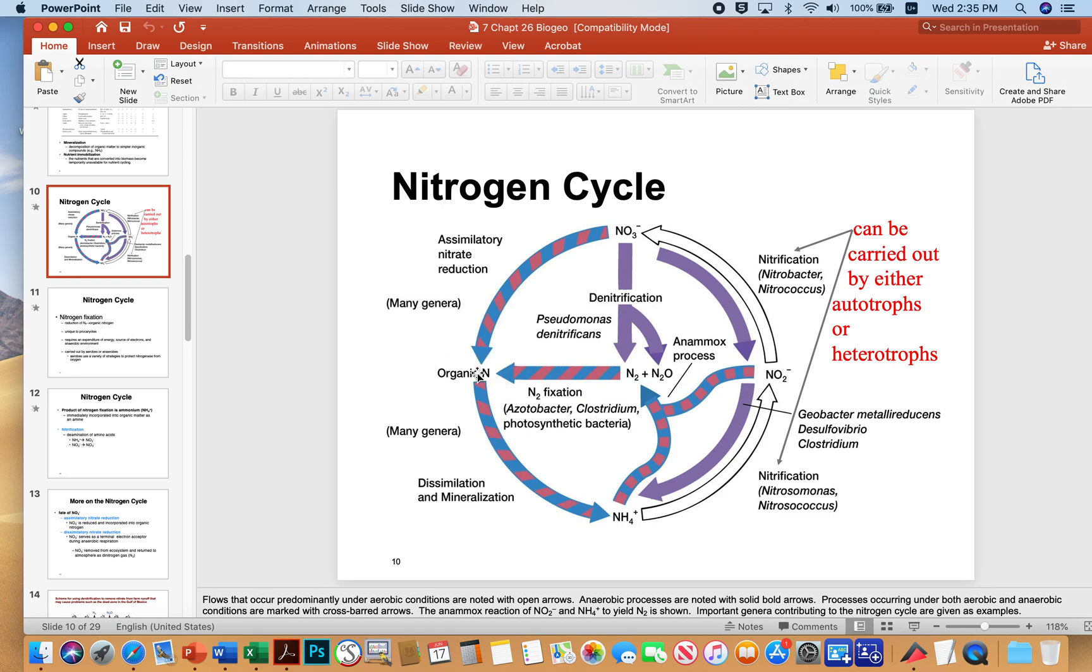The organic nitrogen then can be mineralized essentially to ammonia, as I just mentioned, and then this simpler form of nitrogen can undergo nitrification. So certain microbes like nitrosomonas or nitrosococcus can nitrify this. When you see an open bar like this, that's an aerobic process. So nitrification is an aerobic process in which ammonia is oxidized to nitrite, and then nitrite is further oxidized to nitrate. Different kinds of microbes can do different sets of nitrifying reactions.